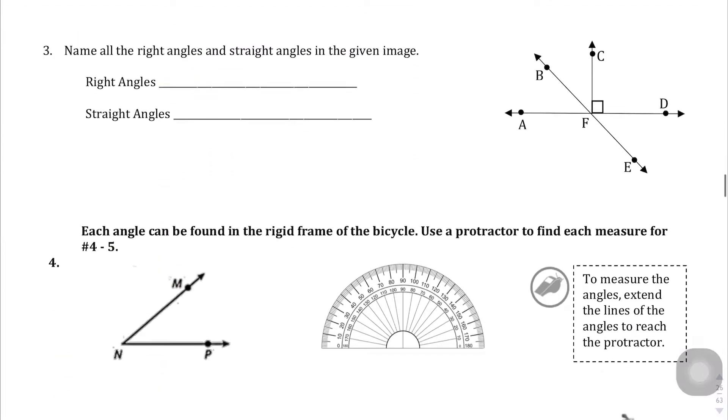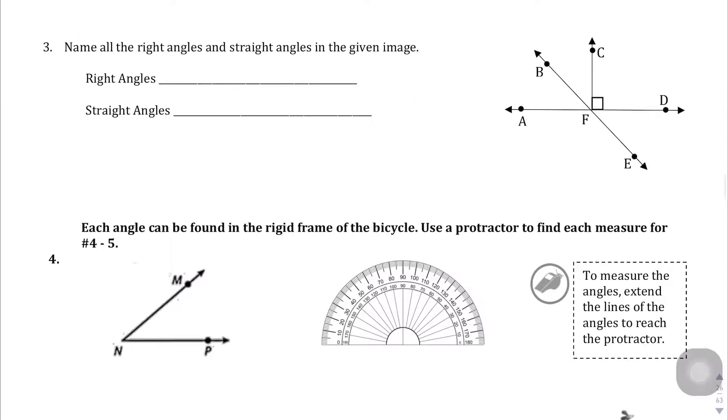Last page for this video. Name all the right angles and straight angles in this given image. Right angle, there's one right here, obviously. We're gonna use that naming convention we learned. C, F, D. There's a right angle. You could also call this D, F, C.